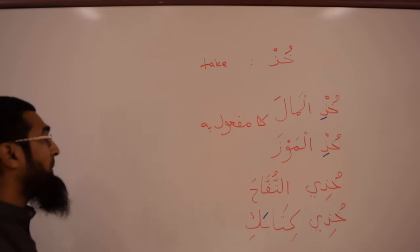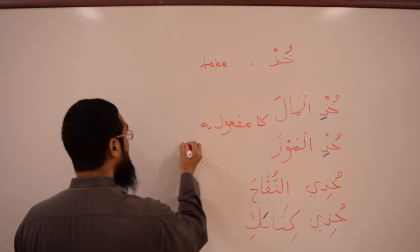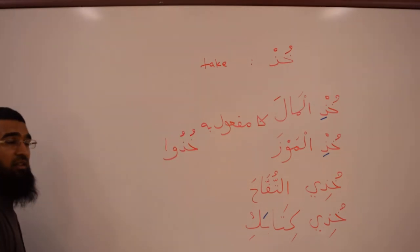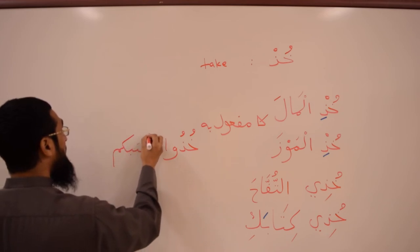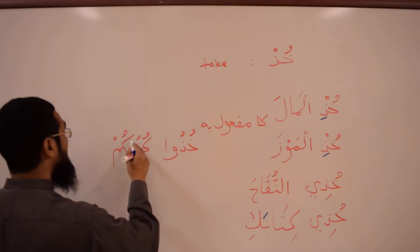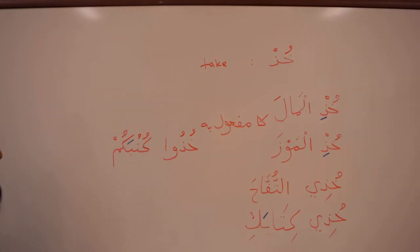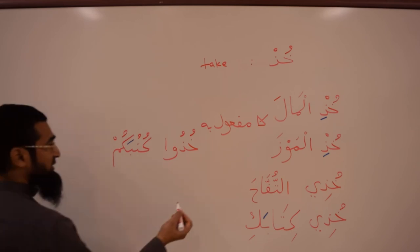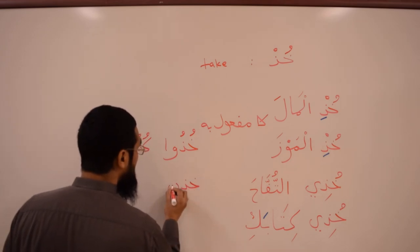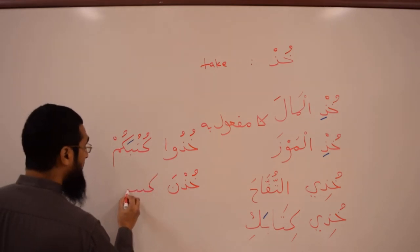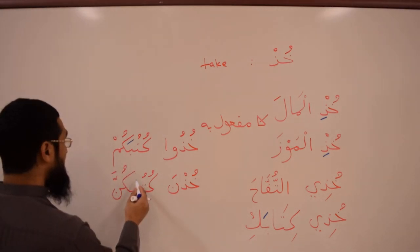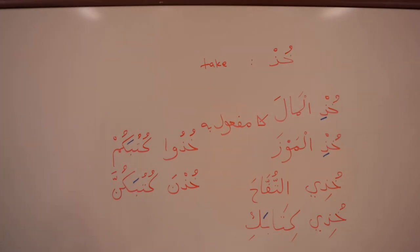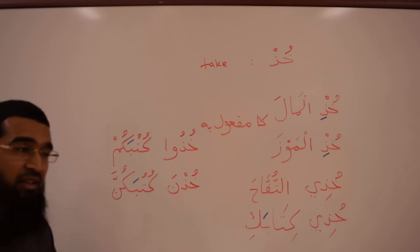If it is a group, you say khudu. For example: Khudu kutubakum, ya ikhwan — take your books. It takes a fatha because it is the maf'ulun bihi. And if it is a group of females, you say: khudu kutubakunna — take your books — and the maf'ulun bihi again takes a fatha.